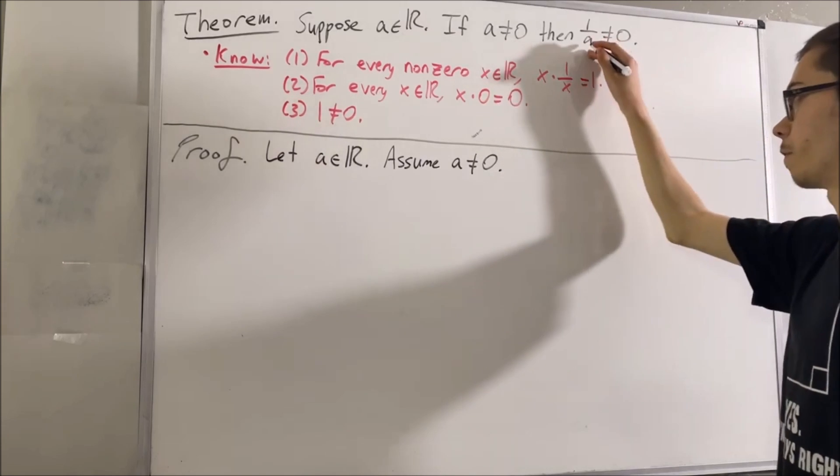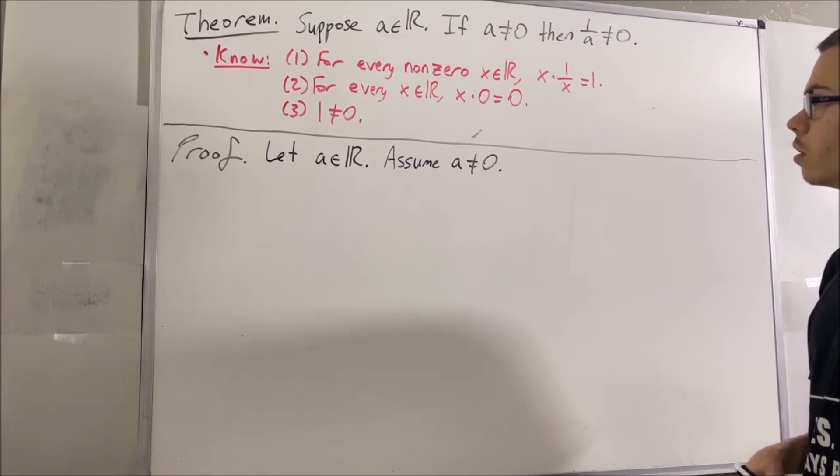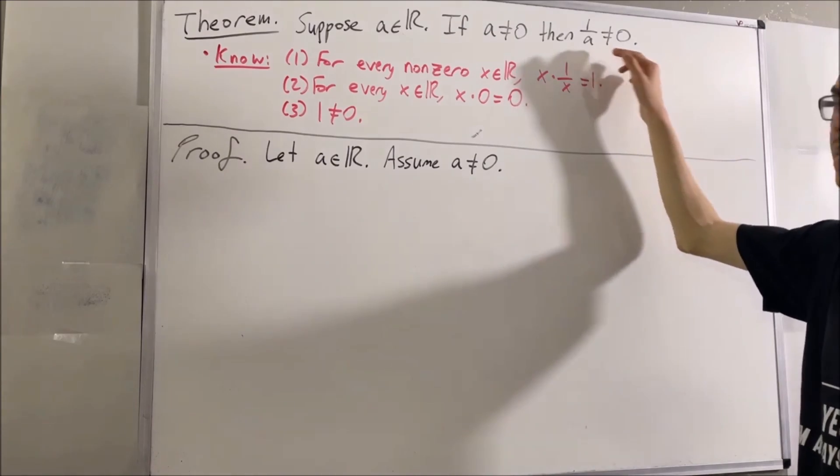Our goal is to deduce that the reciprocal of A is not equal to zero. Let's assume for a contradiction that the reciprocal of A is equal to zero.